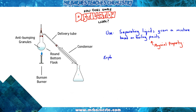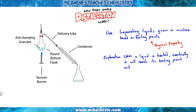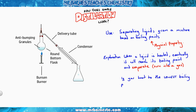So how does this work? When a liquid is heated, eventually it's going to reach its boiling point. At that point it will turn from a liquid into a gas — it will evaporate. Now if you have two liquids in your mixture and you only heat it to the lowest boiling point, only one liquid will evaporate.